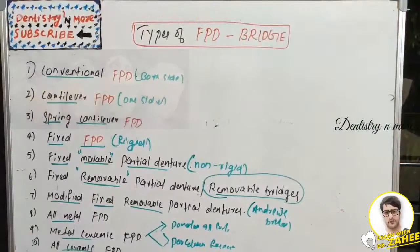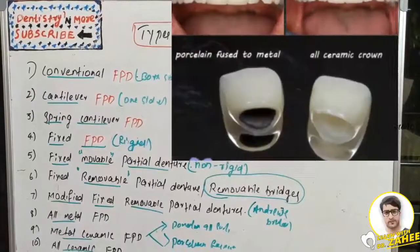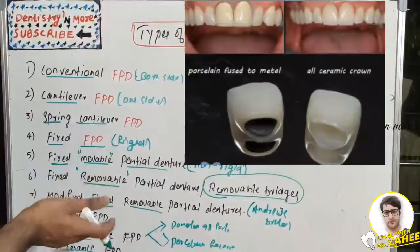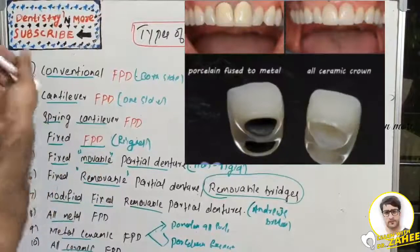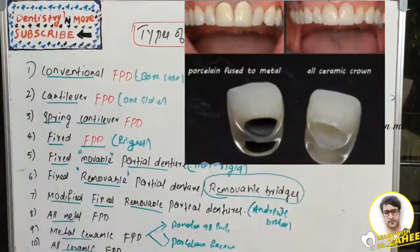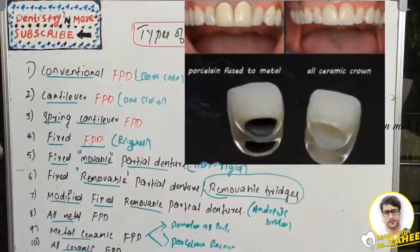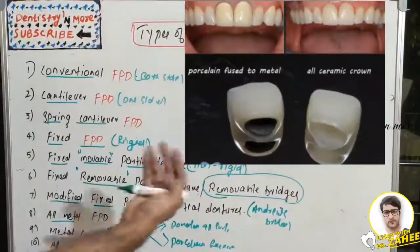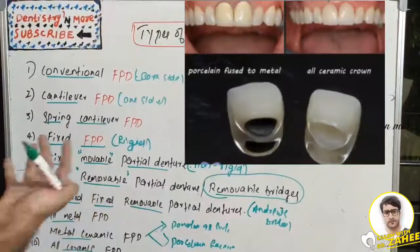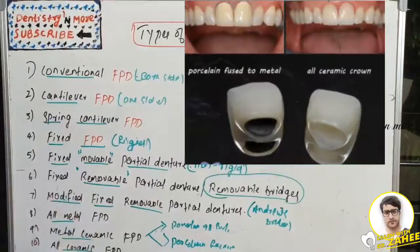In all-ceramic FPD, the prostheses are fabricated using only ceramic with no metal. All-ceramic restorations are less fracture-resistant; however, aluminium-reinforced porcelain has sufficient strength to be used as a retainer. The best properties of all-ceramic are superior aesthetics and excellent translucency, almost like a natural tooth. It requires only about 1 mm preparation. The appearance can also be influenced by selecting different colors of the luting agent.